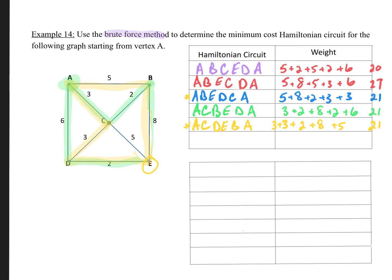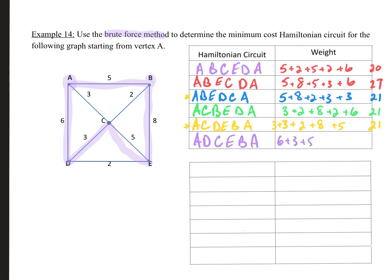Now A → D routes. Note that from D, going directly to B is not possible — you must go through C or E. First route: A → D → C → E → B → A. Edge weights: 6 + 3 + 5 + 8 + 5 = 27. Checking for duplicates — A → D → C → E → B → A matches A → B → E → C → D → A in reverse order, confirming they are duplicate routes.